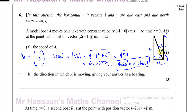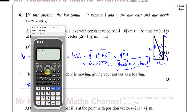The bearing is 360 degrees minus the angle theta, where theta is the angle the vector makes west of north. This angle theta also appears inside the triangle — they are alternate angles forming a Z-shape, so they're equal. In the triangle, the opposite side is 1 and the adjacent is 6, so I use tangent: tan(theta) equals 1 over 6. Therefore theta equals inverse tan of 1 over 6, which gives 9.462 degrees.